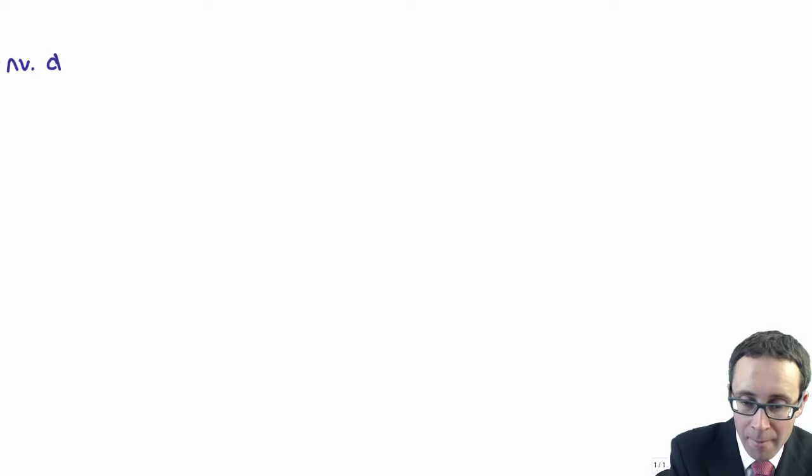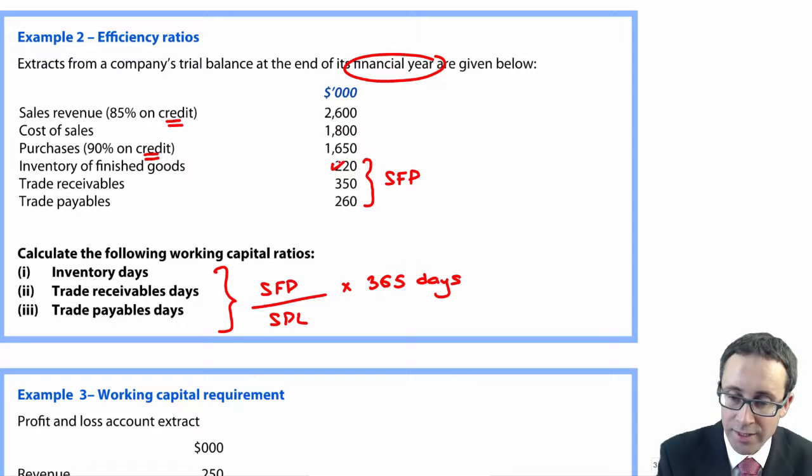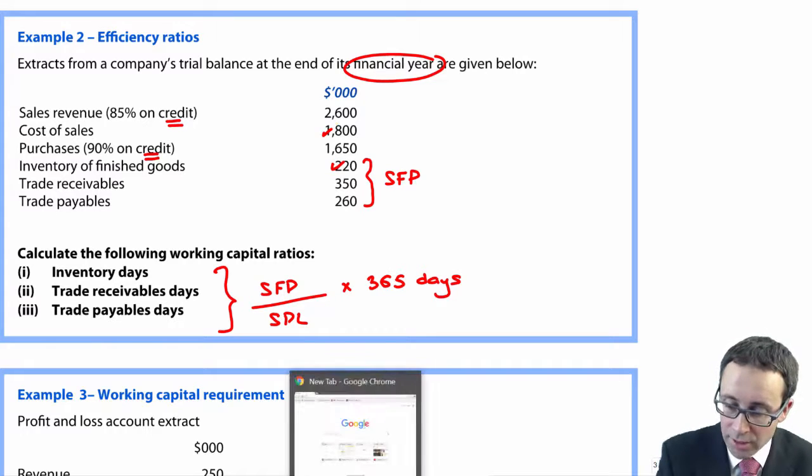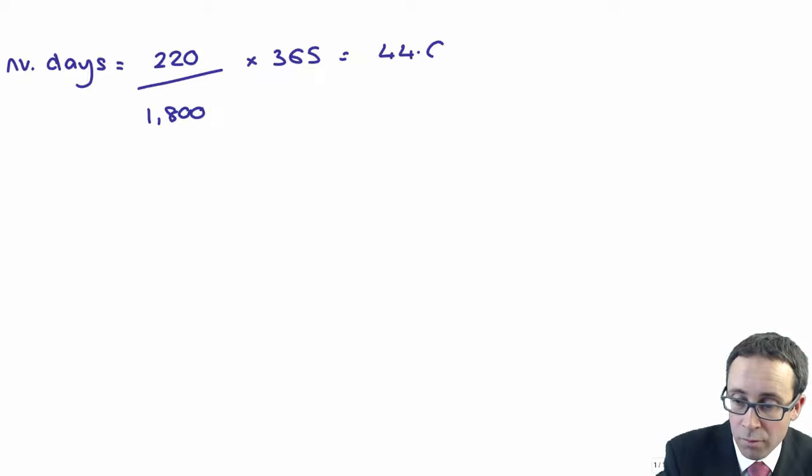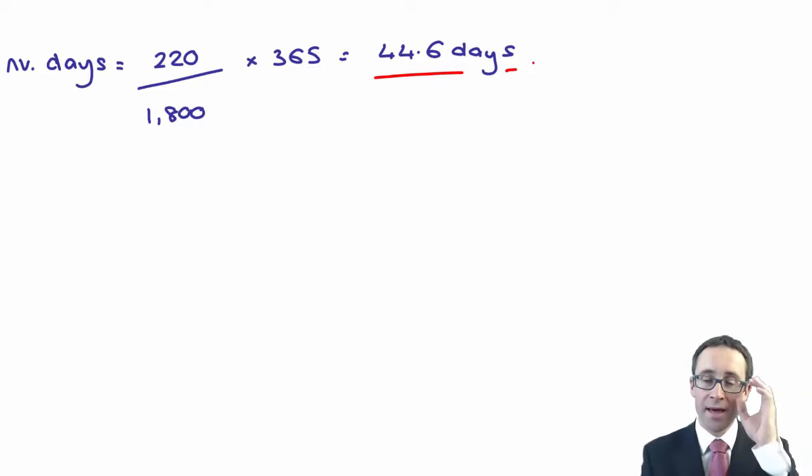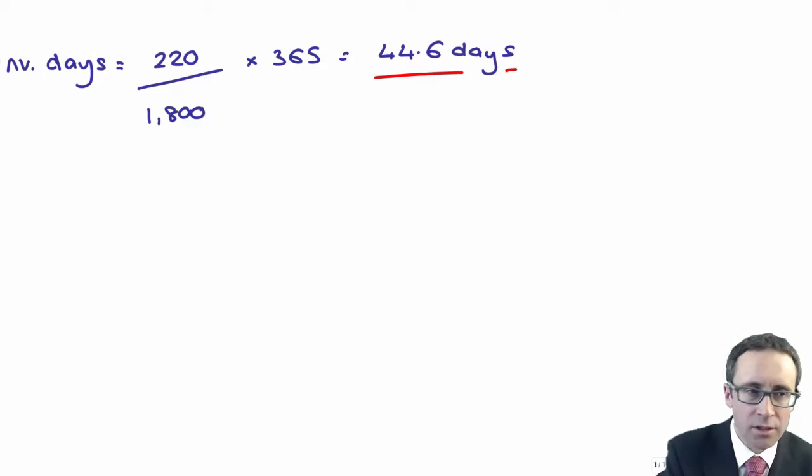If we're looking at my inventory days, it takes my year end inventory of 220 and divides it by the 1,800. So here's that 220 divided by the 1,800 multiplied by 365, gives me 44.6 days. So to you and I, 45 days. The question would be specific with regards to rounding - usually it would be to the nearest day, but I'll leave it there at 44.6. Don't put in number of hours, don't be so ridiculous.